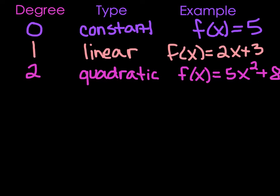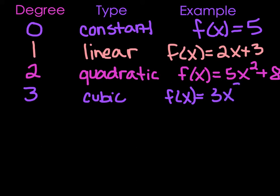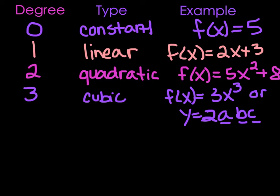If our degree is 3 — the highest power is 3 — that's a cubic. A cubic might look like f of x equals 3x cubed. Also, this doesn't just have to be x; we could have y equals 2abc. It has three variables in it, and we would still consider that to be cubic, even though they're all different variables.